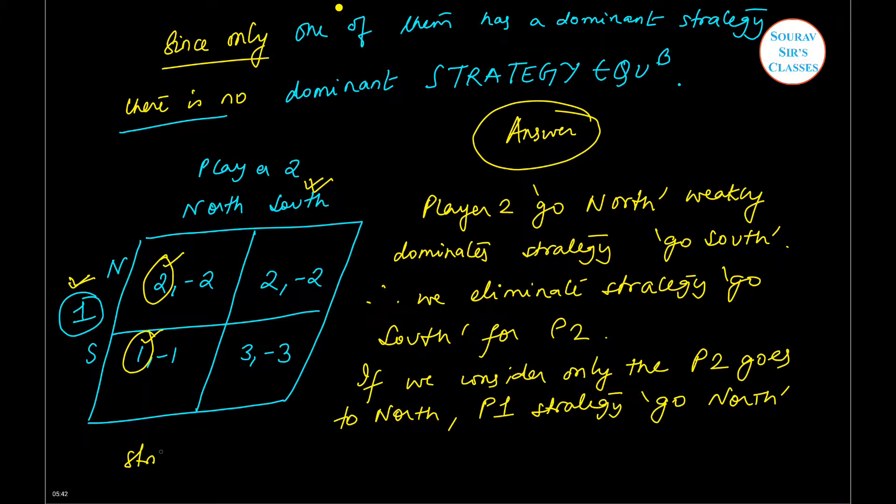Strictly dominant over strategy Go South. Okay, because 2 is greater than 1, so Go South will be the strategy that will be eliminated.